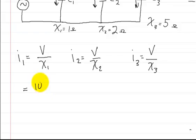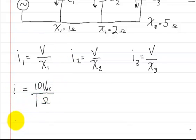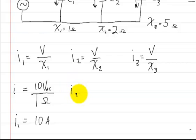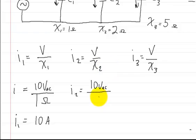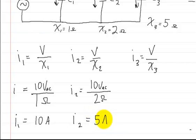So here we have 10 volts AC divided by the reactance here, which is 1 ohm. So current 1 is going to be equal to 10 amps. And the second one, I2 — we plug in the 10 volts AC and divide by the reactive impedance of the second capacitor, which is 2 ohms.